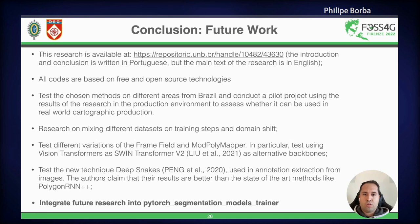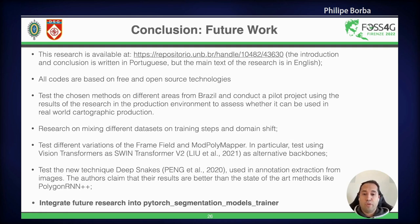All codes are based on free and open source technologies. As future work, we will test the chosen methods on different areas of Brazil and conduct a pilot project to assess whether the results can be used in real-world cartographic production. We also want to research mixing different datasets in training steps and try some domain-shift techniques. We also want to test variations of the FrameField in the ModPolyMapper, in particular replacing the backbone with vision transformers, and test a new technique called DeepSnakes. All these tests will hopefully be integrated into PyTorch Segmentation Models Trainer.